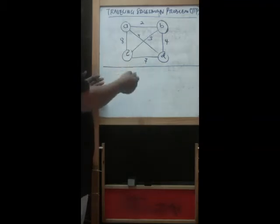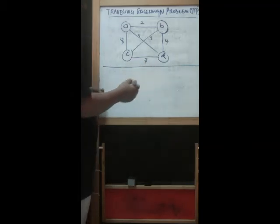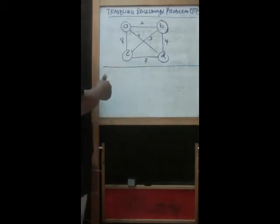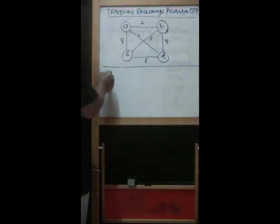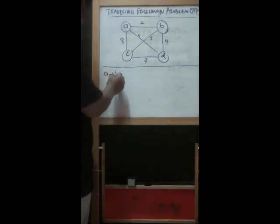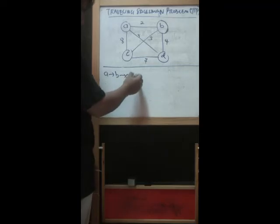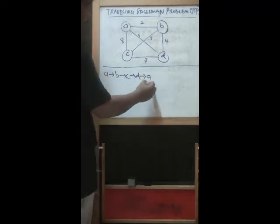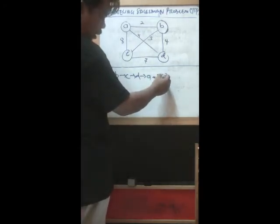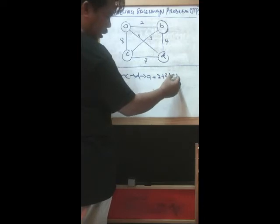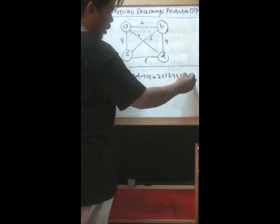After that, we go through each solution to find which one has the minimum total distance. Let's start with A. We can start listing out all possible solutions. Maybe you start with A through B through C through D and back to A. Based on the cost here, 2 plus 3 plus 7 plus 5, which is 17.